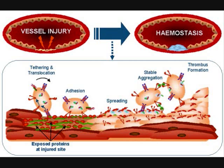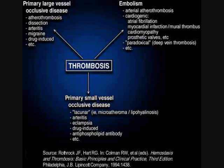For platelet aggregation, ADP and thromboxane A2 secreted by platelets are important. ADP and TXA2 set up an autocatalytic reaction leading to the buildup of an enlarging platelet mass, forming the primary hemostatic plug. Thrombin binds to platelet receptors along with ADP and TXA2, causing further aggregation. This is followed by platelet contraction, creating an irreversible fused mass of platelets constituting the definitive secondary hemostatic plug.